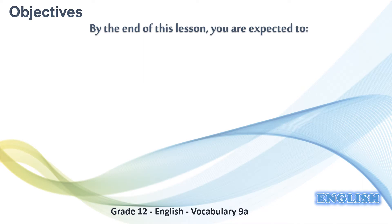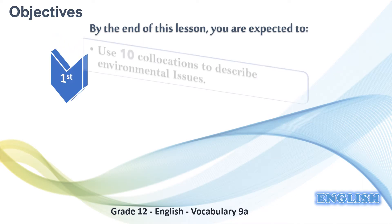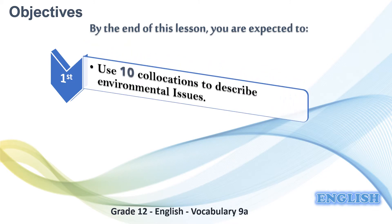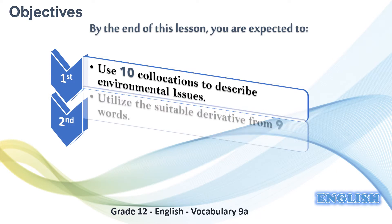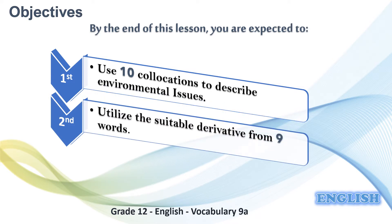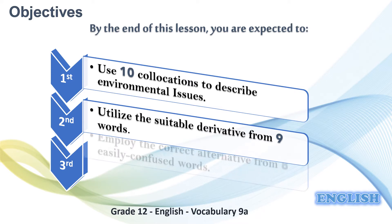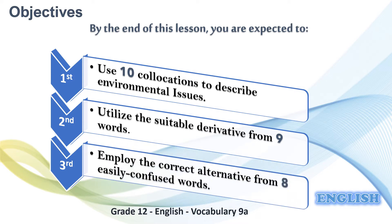By the end of today's lesson we are expected to accomplish three objectives. The first is to use ten collocations related to environmental issues. The second is to utilize the suitable derivatives from nine words. The third objective would be to employ the correct alternative from eight easily confused words.